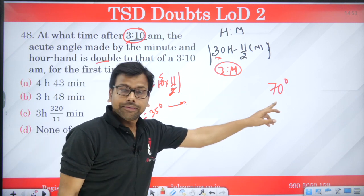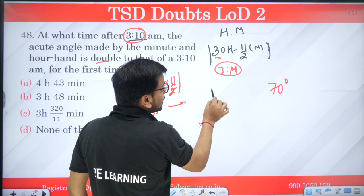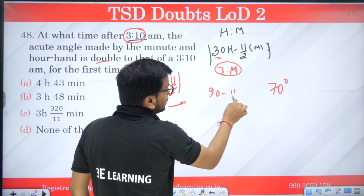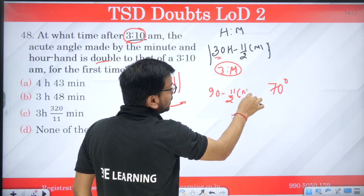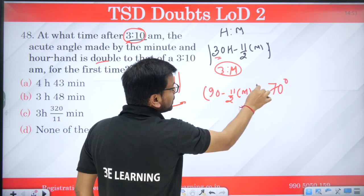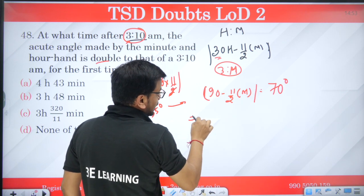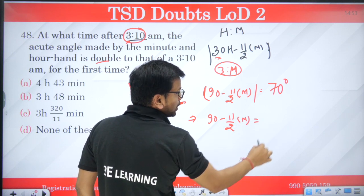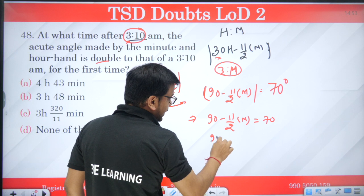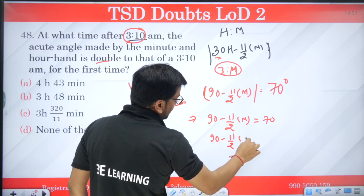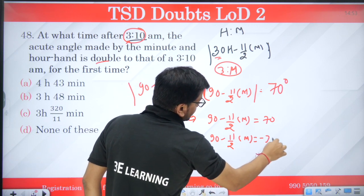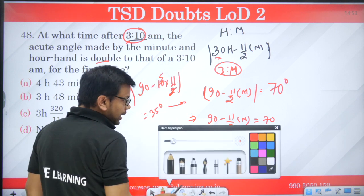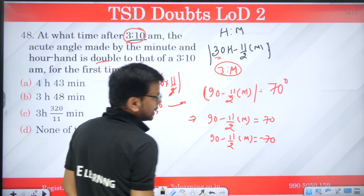For the 70 degrees, 3 multiplied by 30 is 90, minus 11 by 2 m, and we need to find m. So we have 90 minus 11 by 2 m is equal to 70 degrees, or 90 minus 11 by 2 m equal to minus 70 degrees. Mod when it opens, it opens with plus minus both.